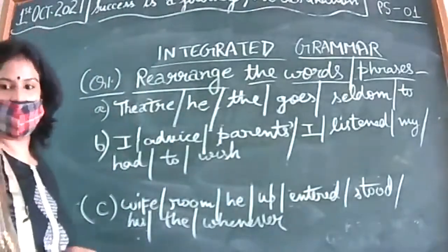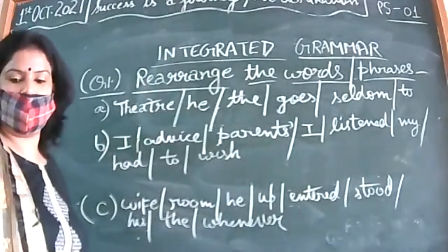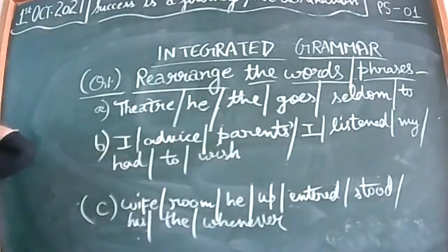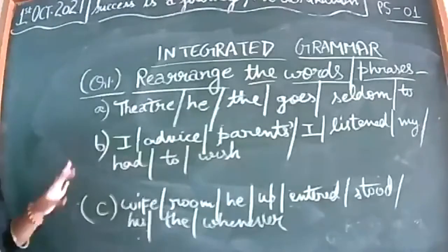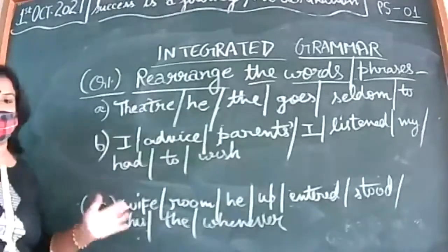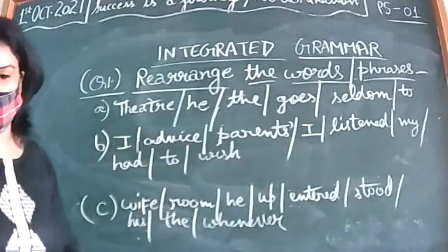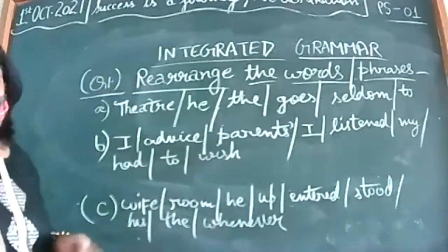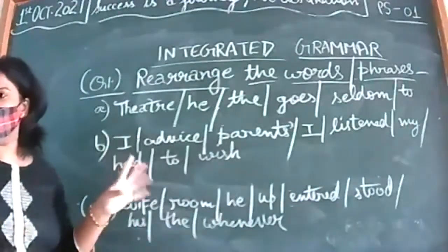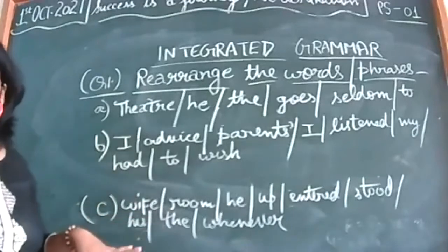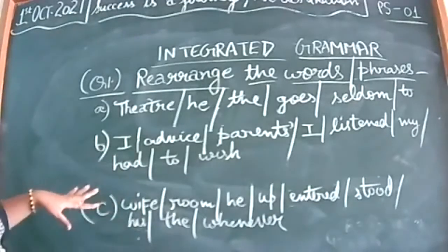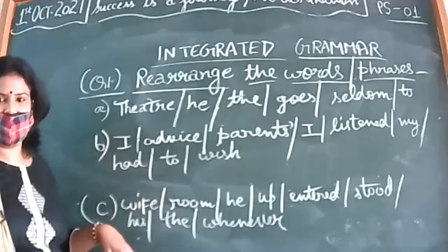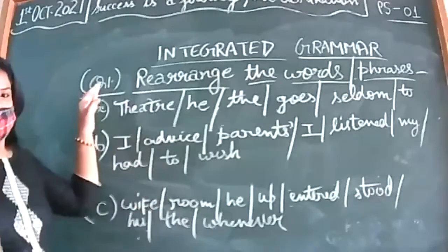Good morning to all the children of class plus one B. We are going to revise various different exercises of grammar today. That's why I have written 'integrated grammar' — we'll be doing rearrangement, editing, omission, and whatsoever is mentioned in your term one and term two also.